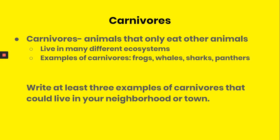Now let's talk about carnivores. Carnivores are animals that only eat other animals. Like herbivores, they live in many different ecosystems. Some examples of carnivores are frogs, whales, sharks, and panthers.